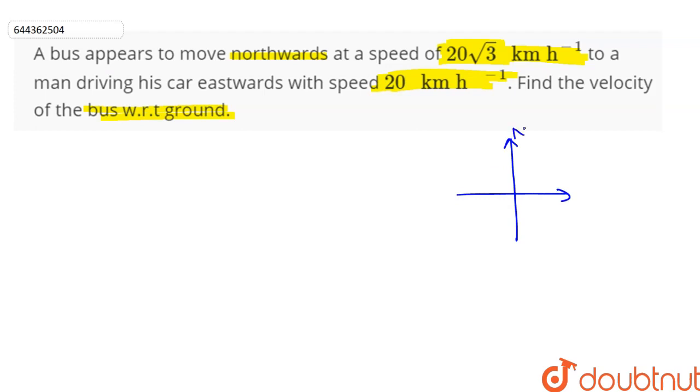So if we show our directions here, this is north, this is south, this is east and this is west. Now east is in the positive x direction, north is in the positive y direction, south is in the negative y direction and west is in the negative x direction.